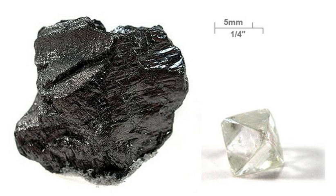Commercially viable natural deposits of graphite occur in many parts of the world, but the most important sources economically are in China, India, Brazil, and North Korea. Graphite deposits are of metamorphic origin, found in association with quartz, mica, and feldspars in schists, gneisses, and metamorphosed sandstones and limestone as lenses or veins, sometimes of a meter or more in thickness. Deposits of graphite in Borrowdale, Cumberland, England were at first of sufficient size and purity that, until the 19th century, pencils were made simply by sawing blocks of natural graphite into strips before encasing the strips in wood. Today, smaller deposits of graphite are obtained by crushing the parent rock and floating the lighter graphite out on water.